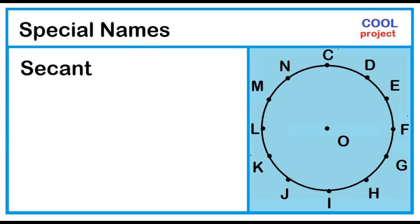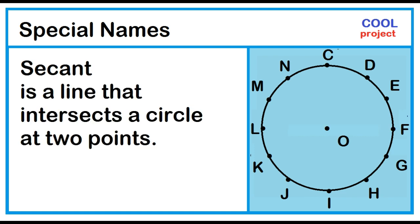Secant. Secant is a line that intersects a circle at two points. Example: Line N-D.